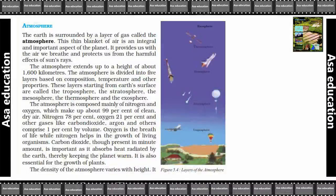Atmosphere. The earth is surrounded by a layer of gas called the atmosphere. Ab earth ke chaaro taraf ek gas ki layer hai jisay bolte hai atmosphere. This thin blanket of air is an integral and important aspect of the planet. It provides us with the air that we breathe and protects us from harmful effects of sun rays. Yeh air jis ki wajay se hum saans lete hai, aur joh harmful effects hote hai sun rays ke, usse bhi hume yeh bachati hai.